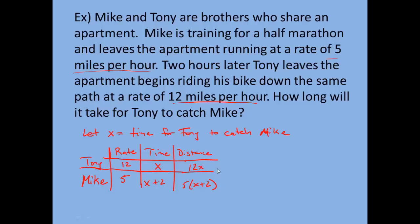Now I have an expression for Tony's distance and an expression for Mike's distance. When they catch each other, they're at the same place, so they've traveled the same distance. All you need to do is set these two distance expressions equal to each other. So 12x is equal to 5 times (x plus 2), and we'll solve that on the next page.